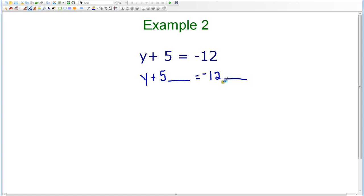I'm also going to leave an empty space after the negative 12, because I know that whatever I do to one side of the equation, I have to do to the other side of the equation in order to keep the equation balanced.